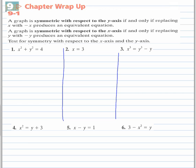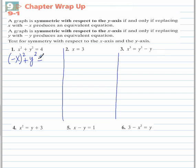In Problems 1 through 6, we check for y-axis symmetry and x-axis symmetry. By replacing x with negative x, we see if there is y-axis symmetry. By replacing y with negative y, we see if there is x-axis symmetry. In both of these situations, the symmetry exists if we end up with the same equation as when we started out.